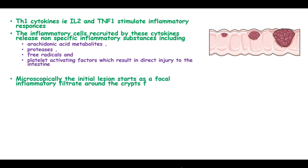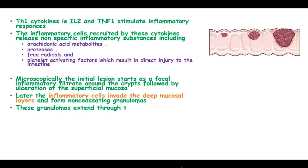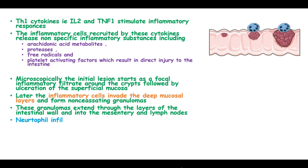Microscopically, the initial lesion starts as a focal inflammatory infiltrate down the crypts, followed by ulceration of the superficial mucosa. Later, the inflammatory cells invade the deeper mucosal layers, forming non-caseating granulomas. These granulomas extend across the intestinal wall to the mesentery and lymph nodes.